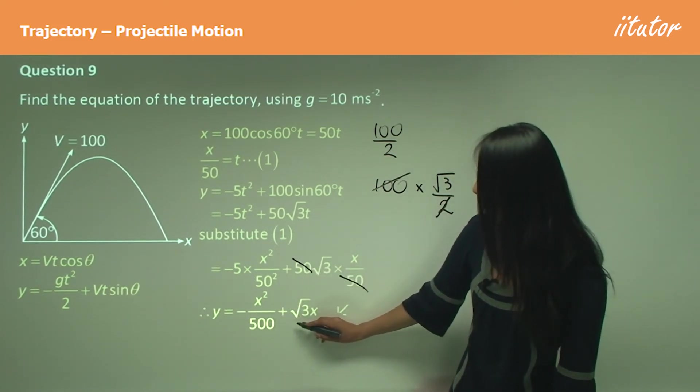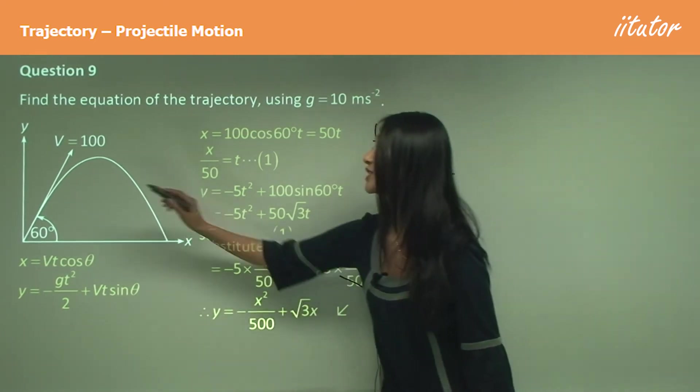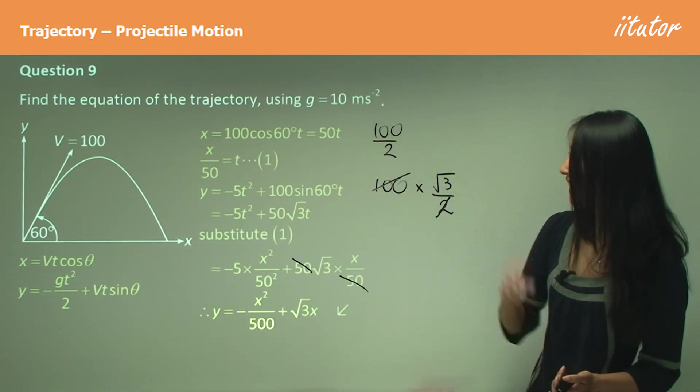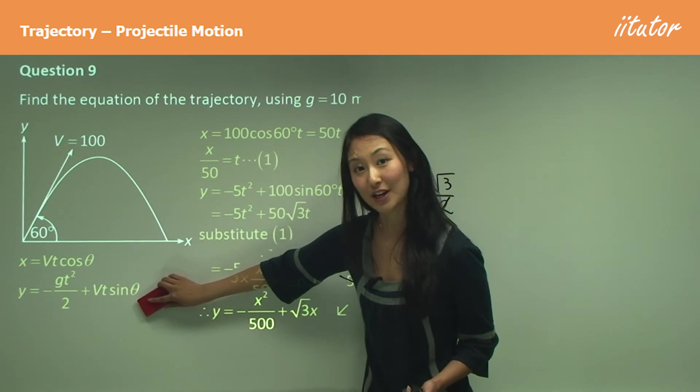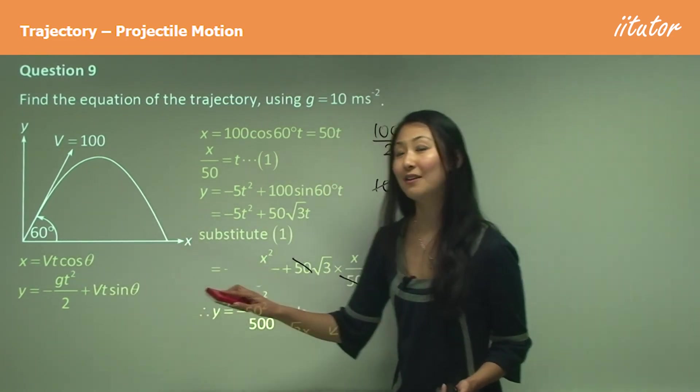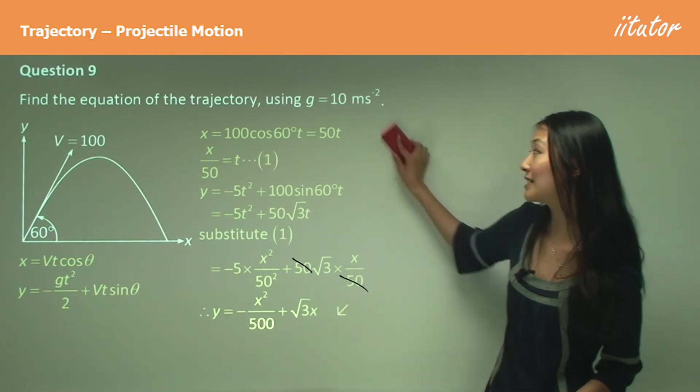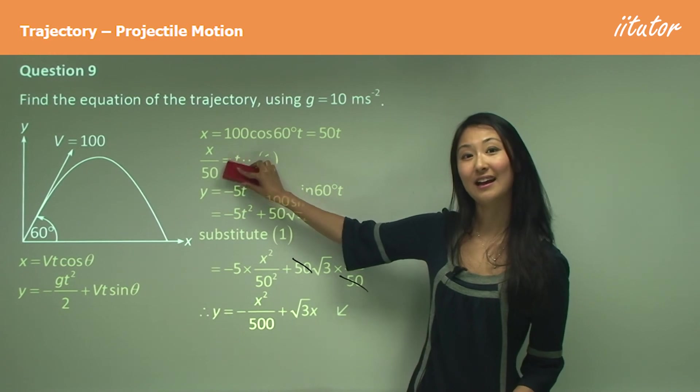Just remember in the exam you would have worked this out in the previous questions, and so we use that information here. Firstly, to make t the subject in our horizontal motion equation, and we make the t the subject here because it's a much easier equation, as you can see, so it's easier to sub in.